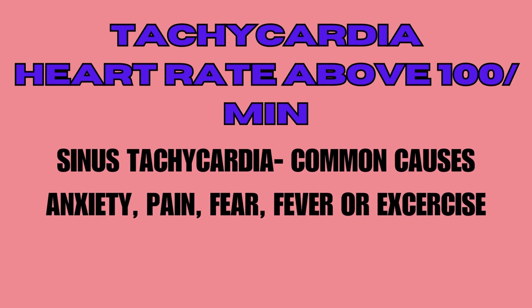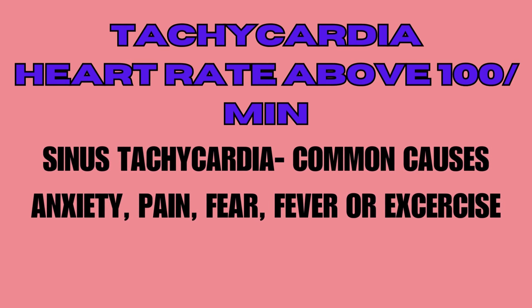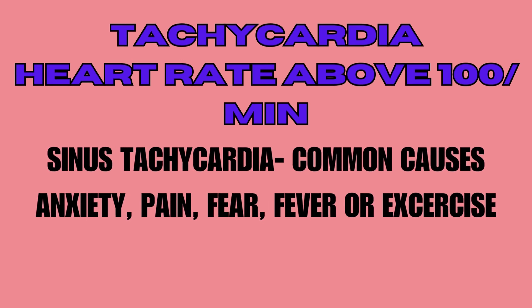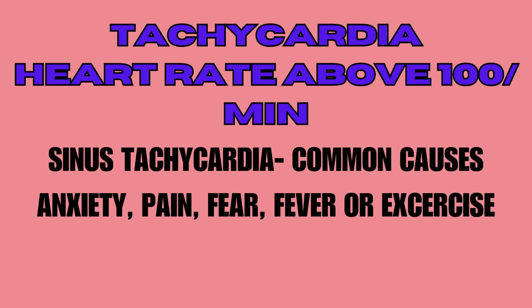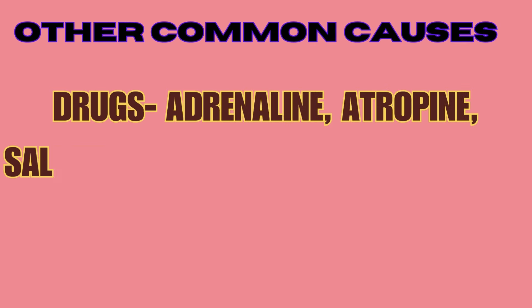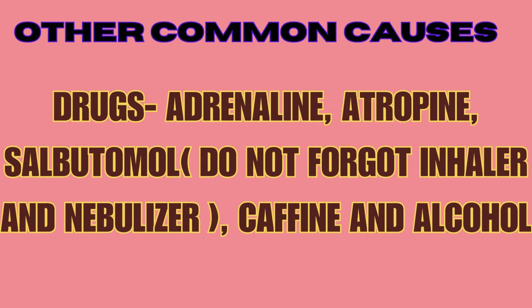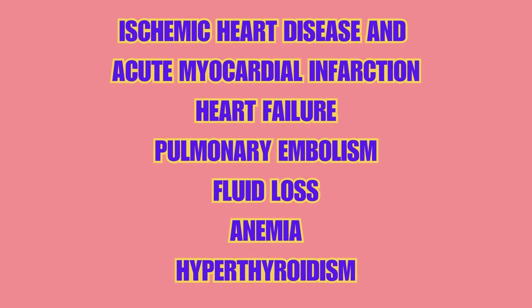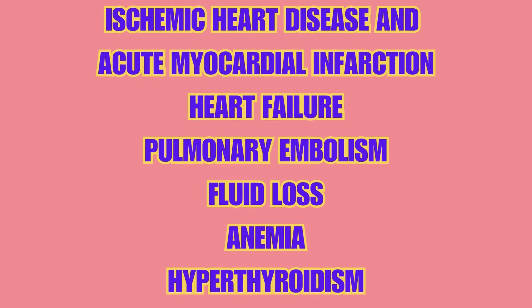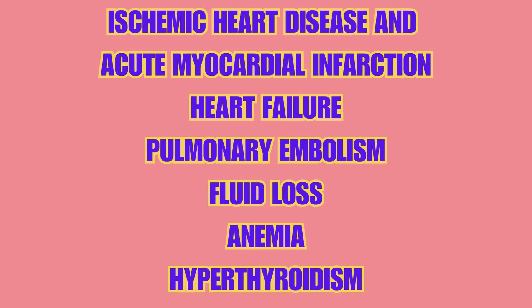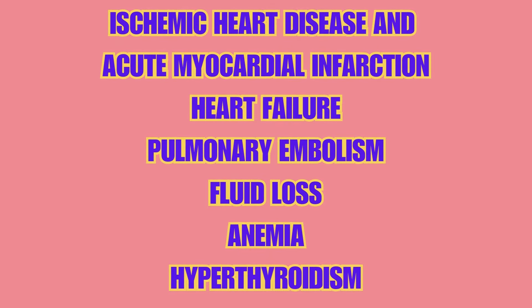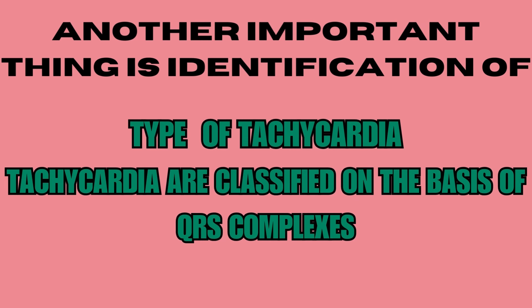Heart rate above 100 per minute is called tachycardia. Sinus tachycardia is a regular cardiac rhythm in which the heart rate is more than 100 per minute. Common causes include anxiety, pain, fear, fever, or exercise. Other common causes include drugs like adrenaline, atropine, salbutamol — do not forget inhalers and nebulizers — caffeine and alcohol, ischemic heart disease and acute myocardial infarction, heart failure, pulmonary embolism, fluid loss, anemia, and hyperthyroidism.